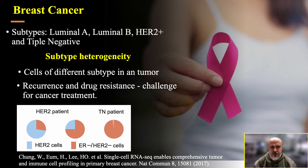Subtype heterogeneity corresponds to the presence of cells of different subtypes in the same tumor. It represents a challenge for breast cancer treatment because it contributes to recurrence and drug resistance. Chang and collaborators have shown that in HER2-enriched patients, we can find around 16 or even 46% of triple-negative cells.